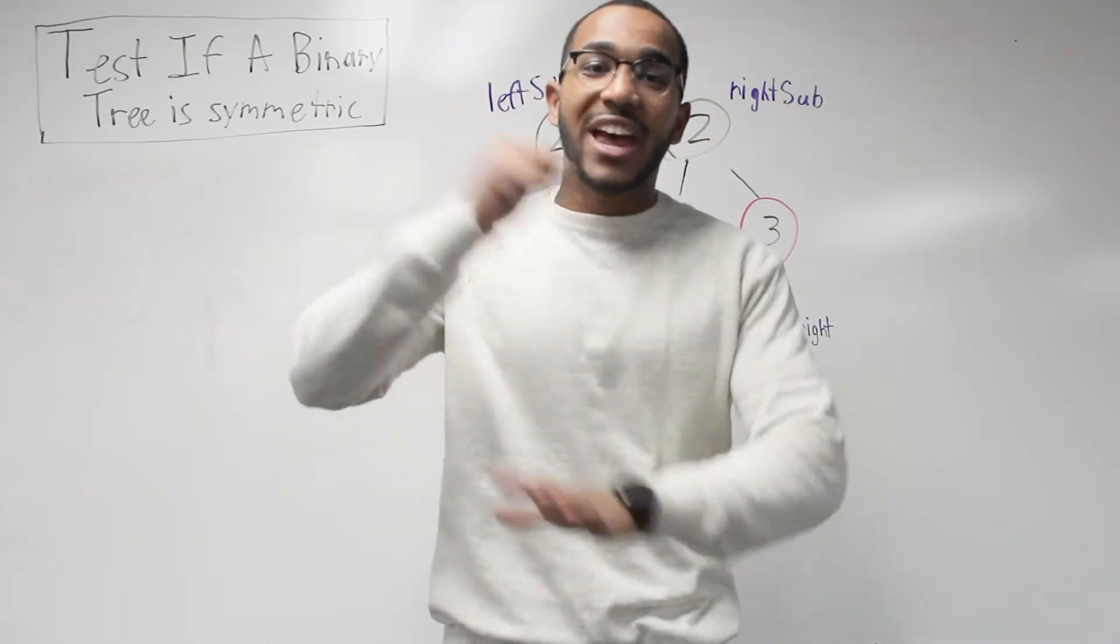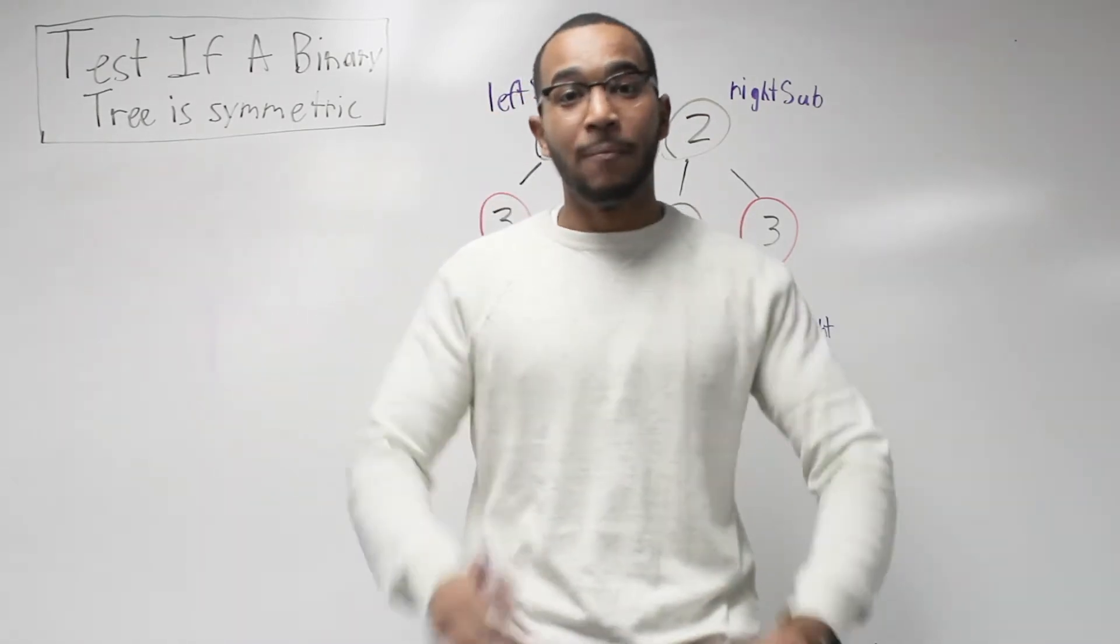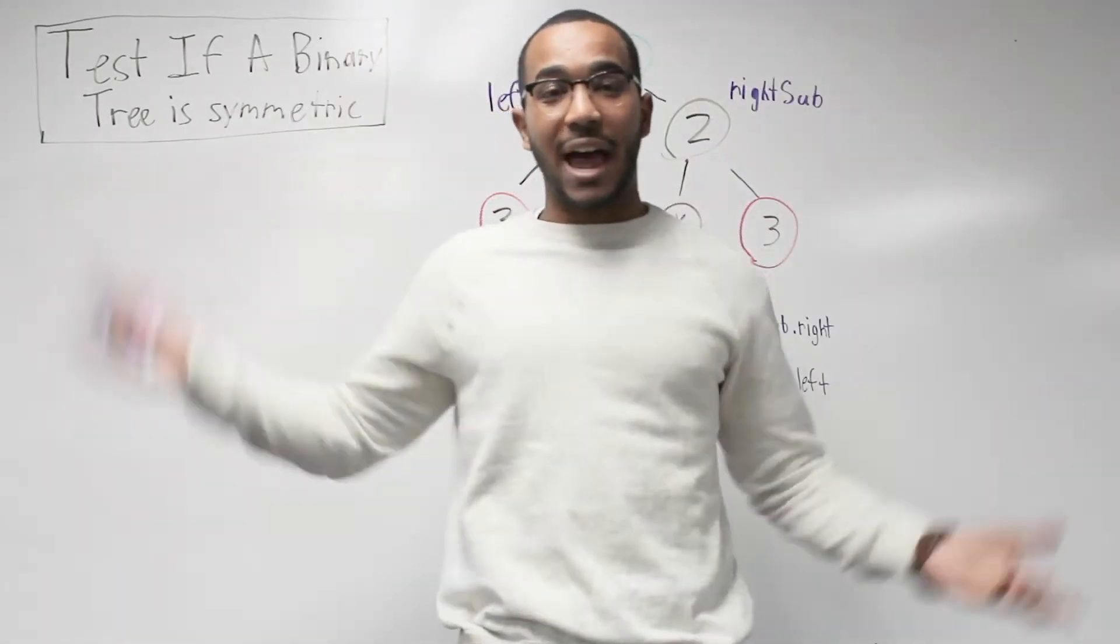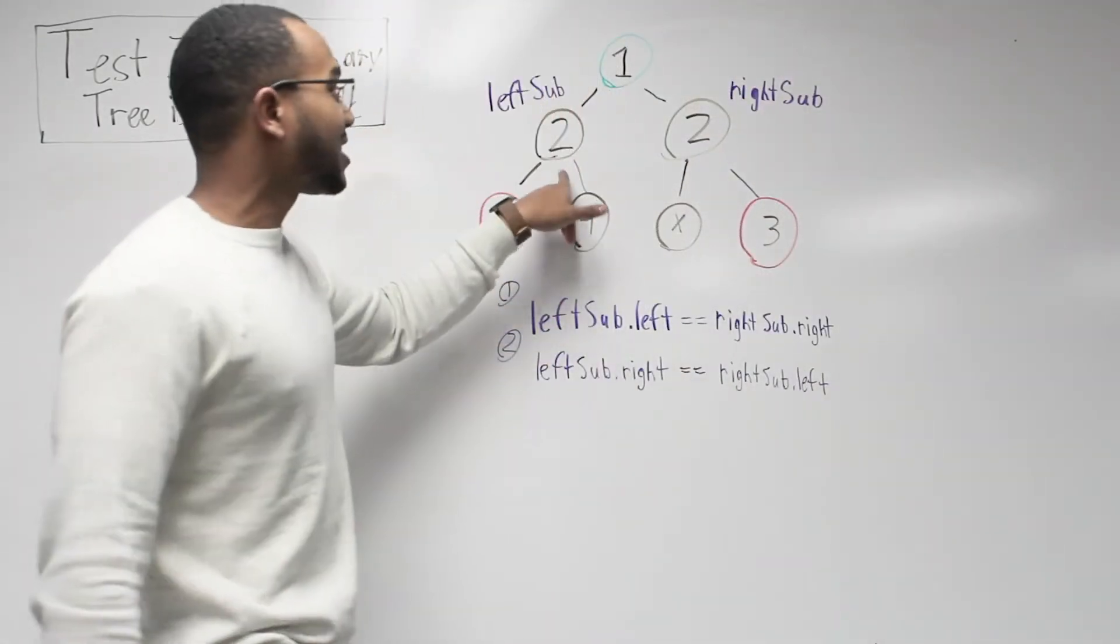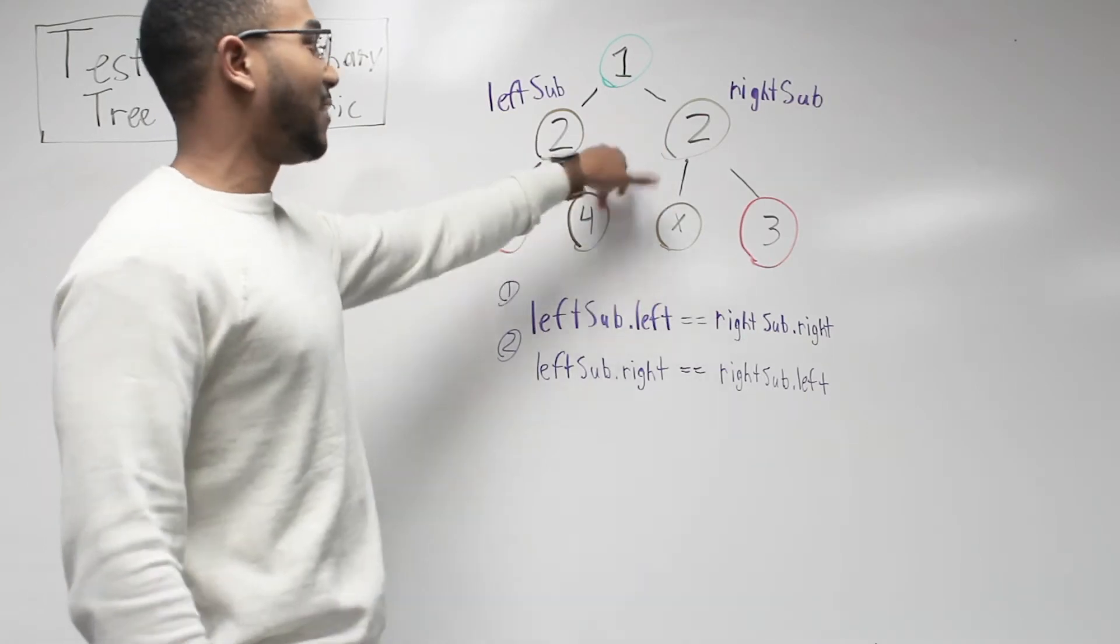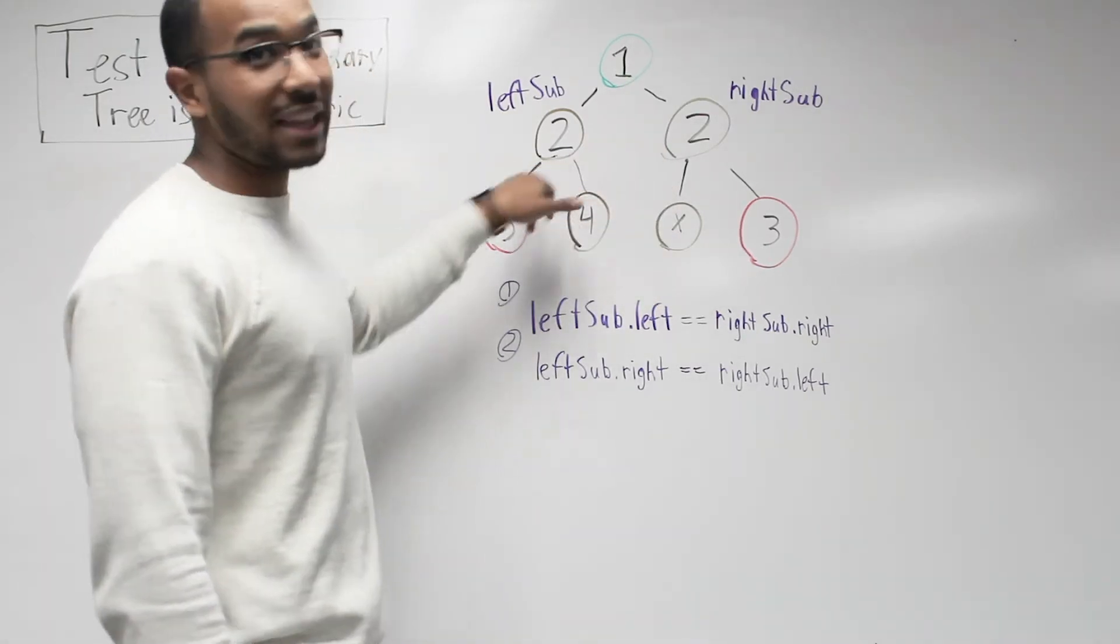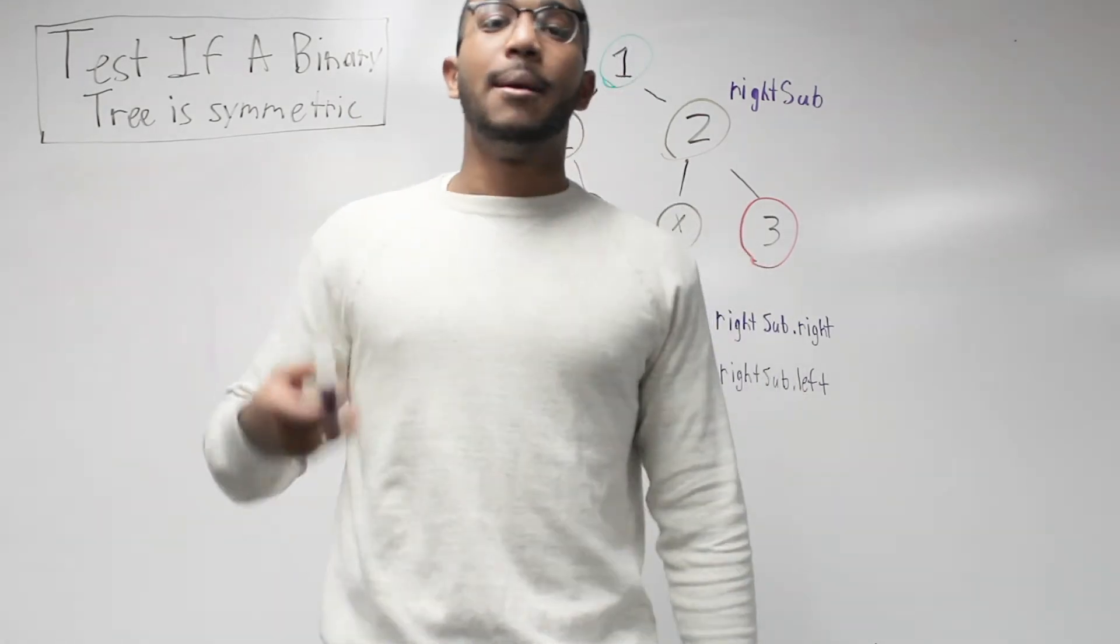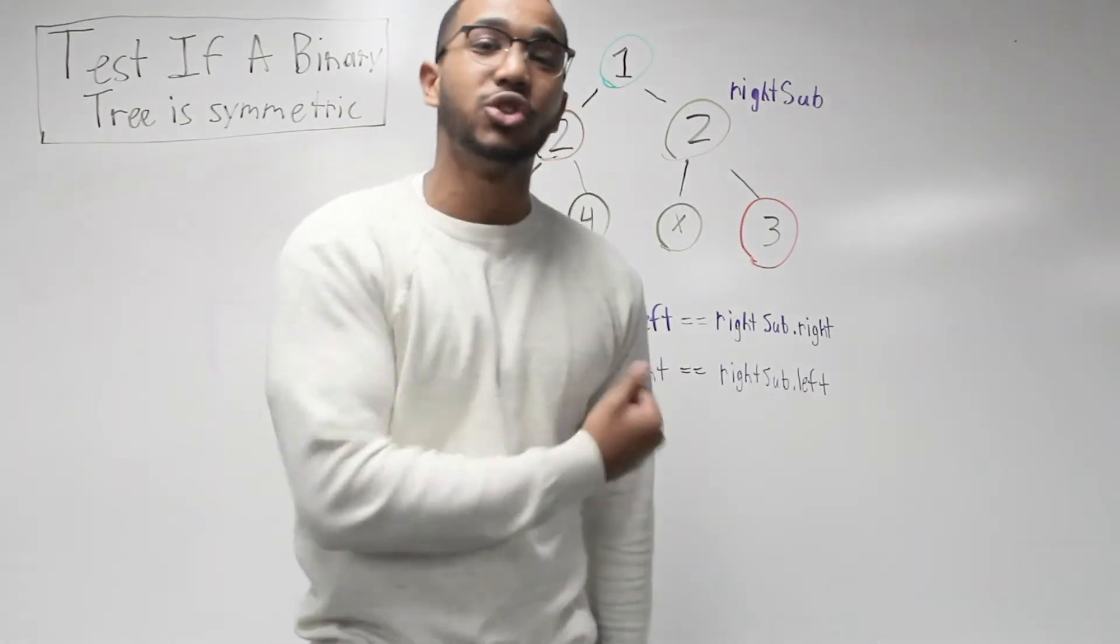Notice, our left subtree and right subtree, we're working with these nodes representing the root of those subtrees. We notice the left subtree's left must equal the right subtree's right. This is part one. We also see that this guy needs to equal this guy. That's rule two. We need the left subtree's right to equal the right subtree's left.